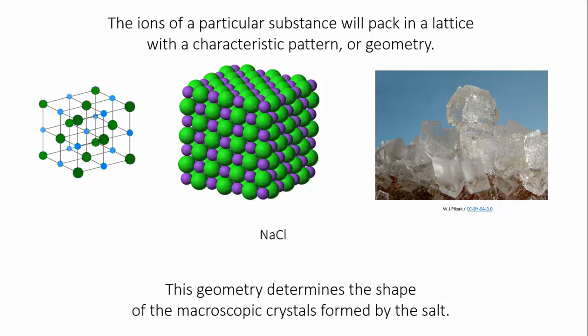For instance, sodium chloride packs into a lattice called simple cubic, and when you grow crystals of table salt, you'll see that the predominant shape is a cube.